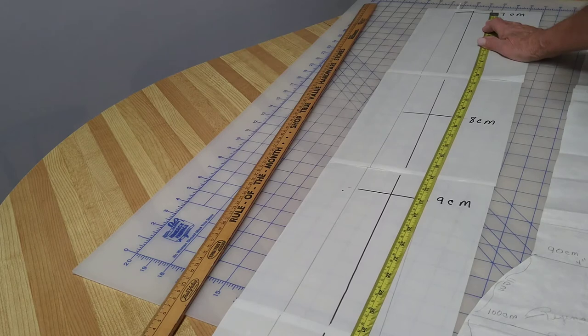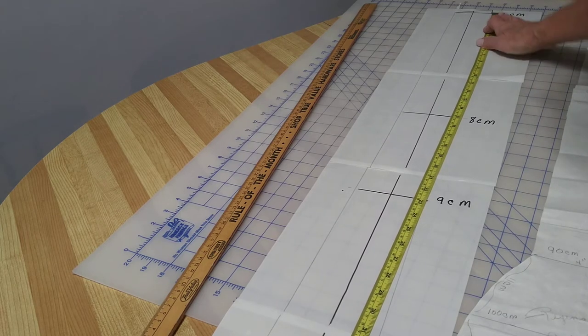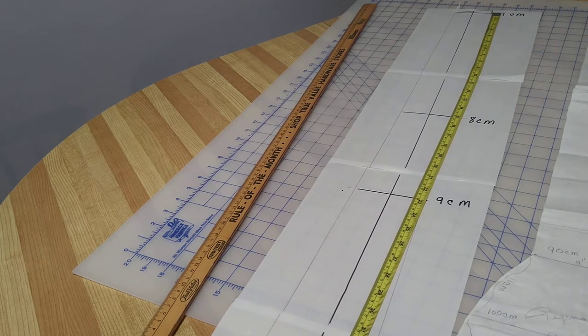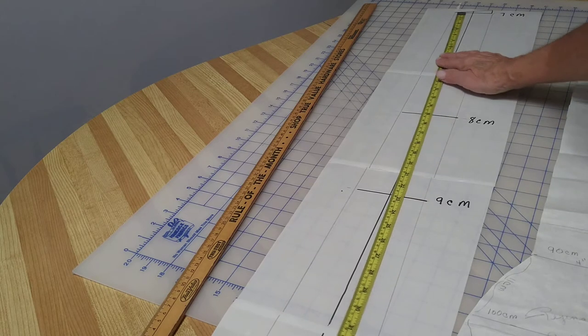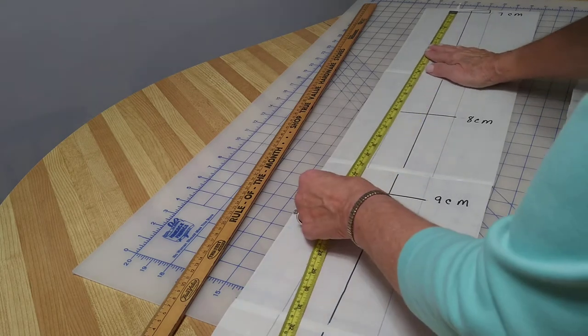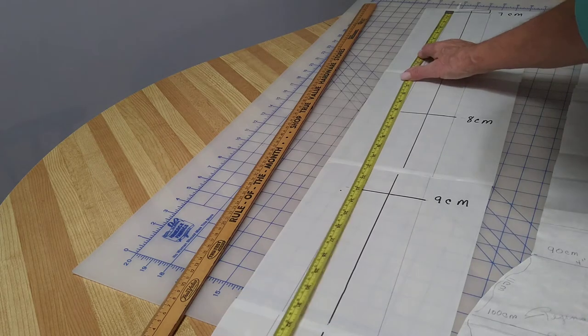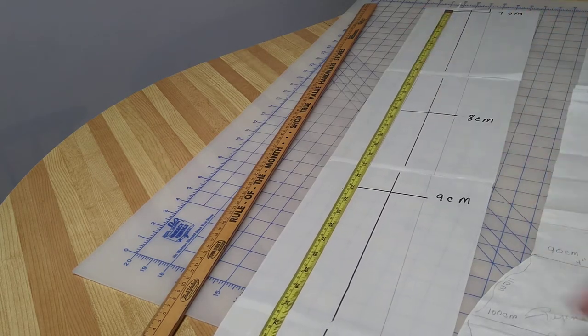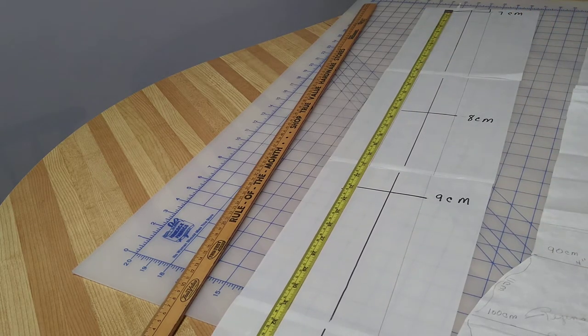Come down to 110 at the edge of that mark that you have at the top to make sure it's 110. Then go to the other side of that 7 centimeter and come down and make sure it's 110. That way you know that your pattern that you're making is square.